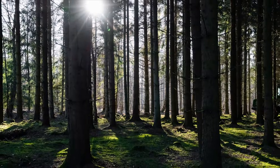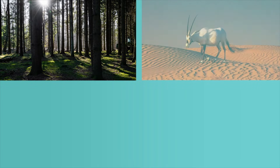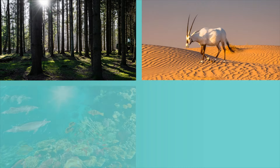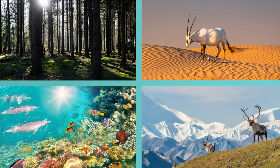Every habitat, biome, and landscape on Earth is a delicate balance between many different pieces, like the water and sea life in a coral reef, or the jagged rocks and cold weather atop a mountain. Changing just one of these pieces can have a huge impact on everything involved in that balancing act.